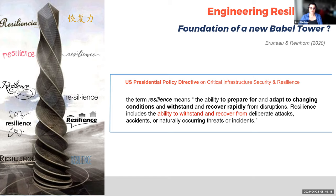The usual engineering terminology for resilience comes from the US presidential policy directive, which talks about the ability to prepare, adapt to changing conditions, withstand, and recover rapidly from disruptions — including earthquakes. Unfortunately, this term has been used with different meanings, and there is some confusion. Even the people who first incorporated the term in engineering design frameworks have concerns that it could become a tower of babel where everybody's talking but meaning different things.